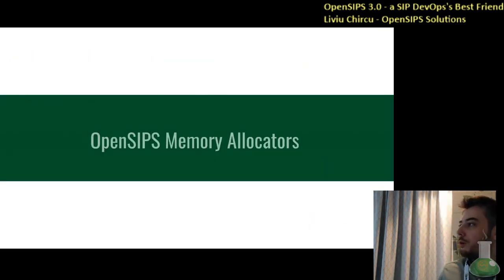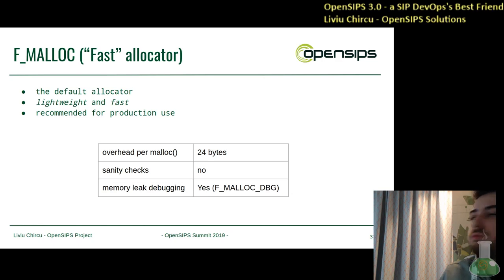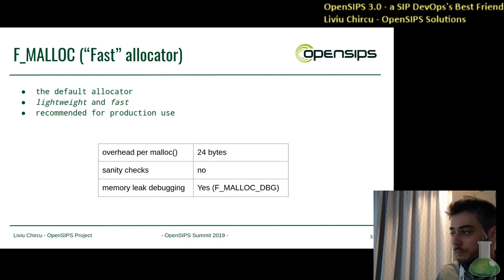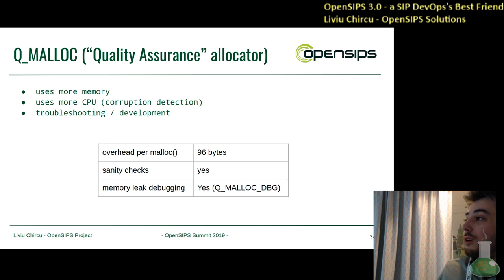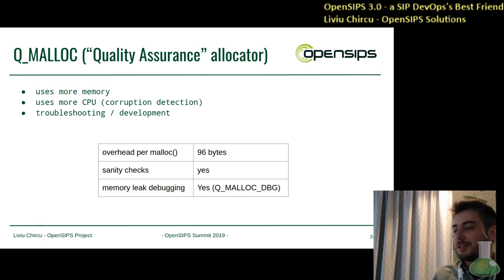A little bit about each allocator. The first one, and the default in the production build, is the fast allocator. It's pretty much the one you definitely need to go with once you know your system is stable. The good thing about it is that it also has memory leak debugging support, so you can hook that in whenever you have those types of issues.